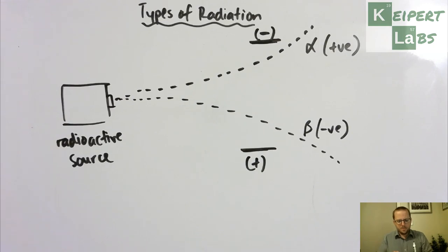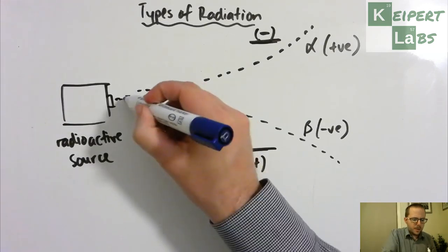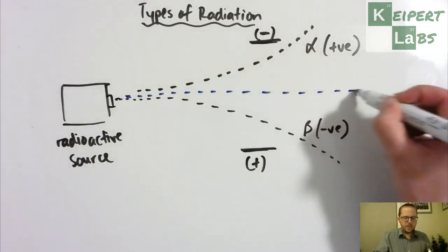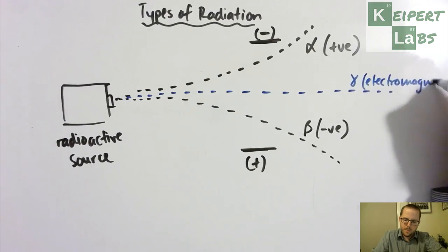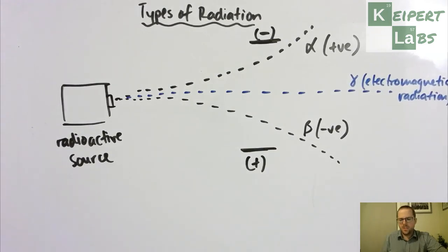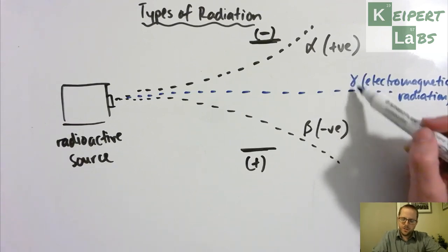And then what we get is we then get this beam of radiation that goes completely through the middle, totally uninterrupted, doesn't bend towards either side. And we call this one gamma radiation. This is electromagnetic radiation. So the Greek letter gamma, which is the kind of, this is like the third letter of the alphabet. So it kind of looks like a fish on its side.